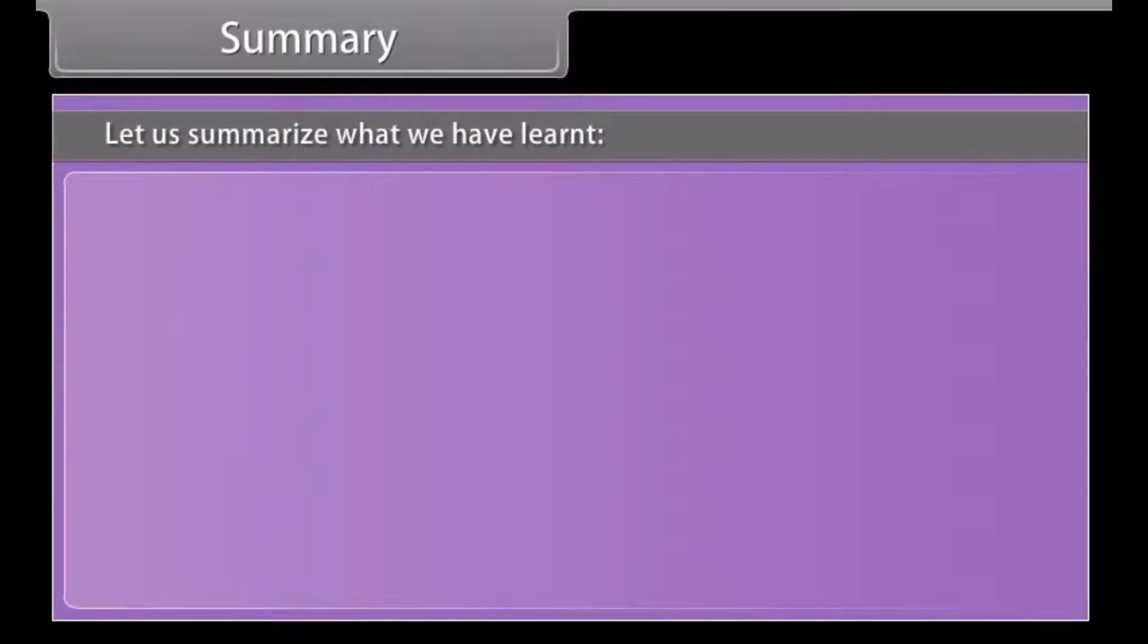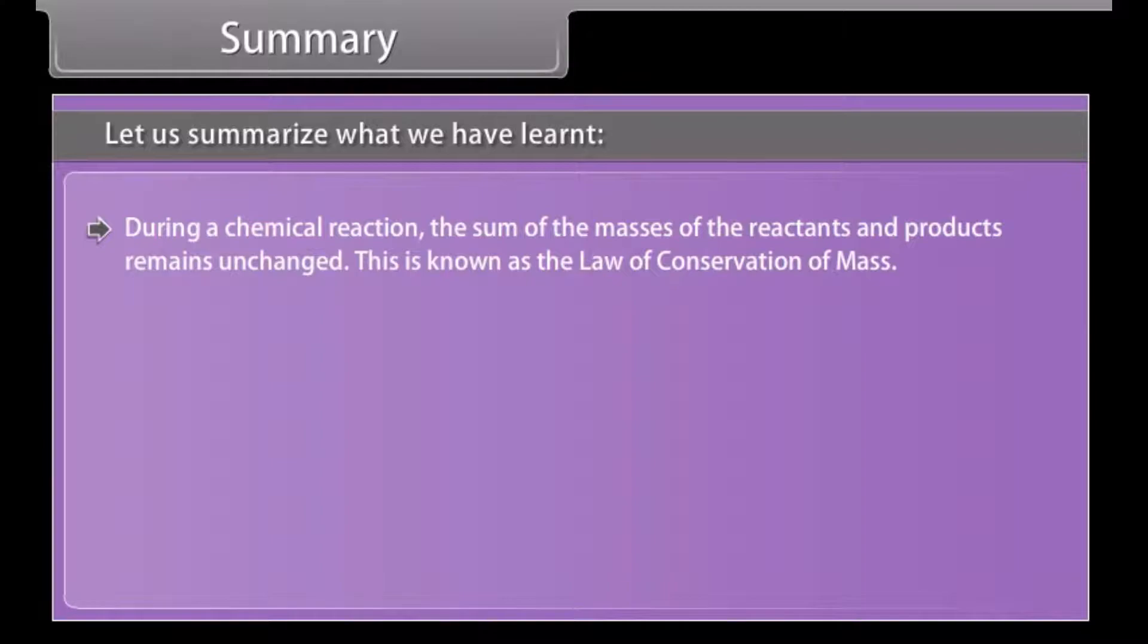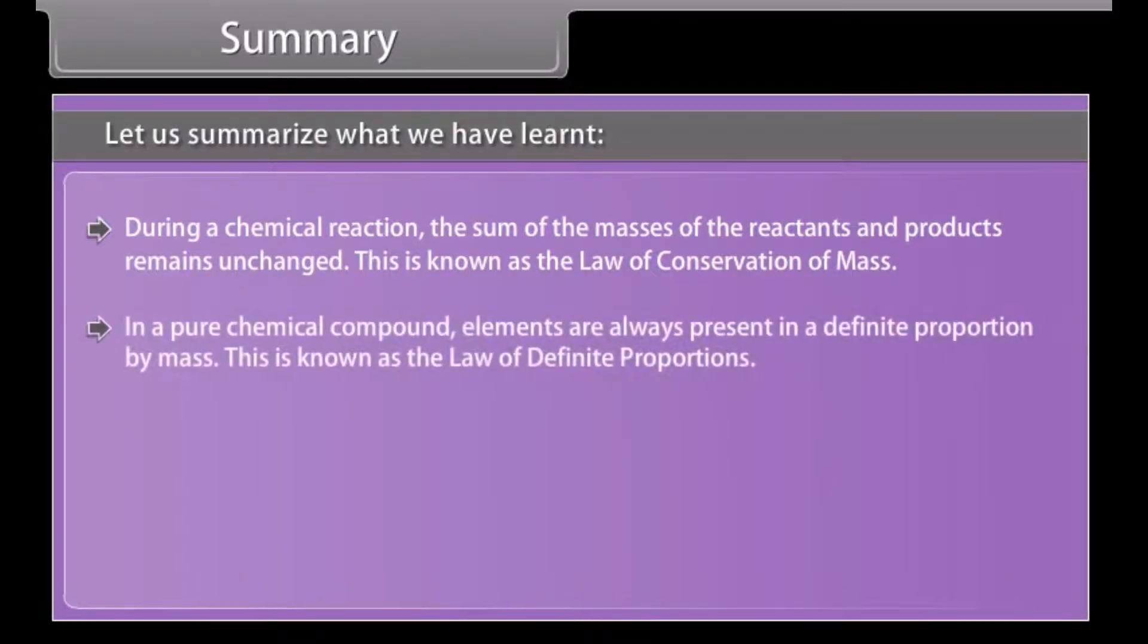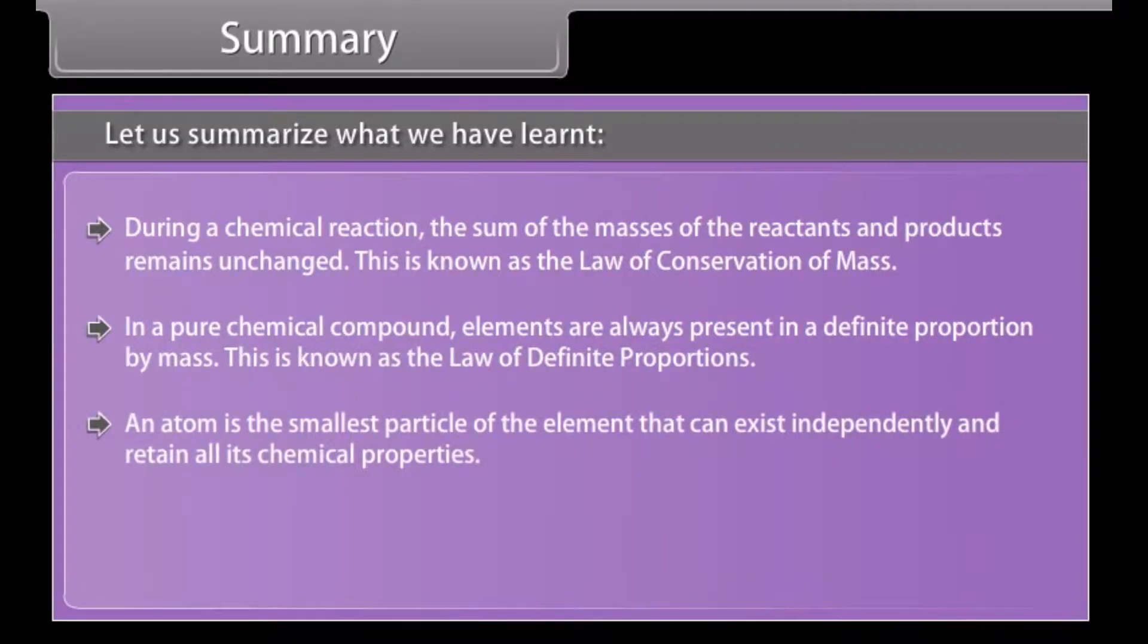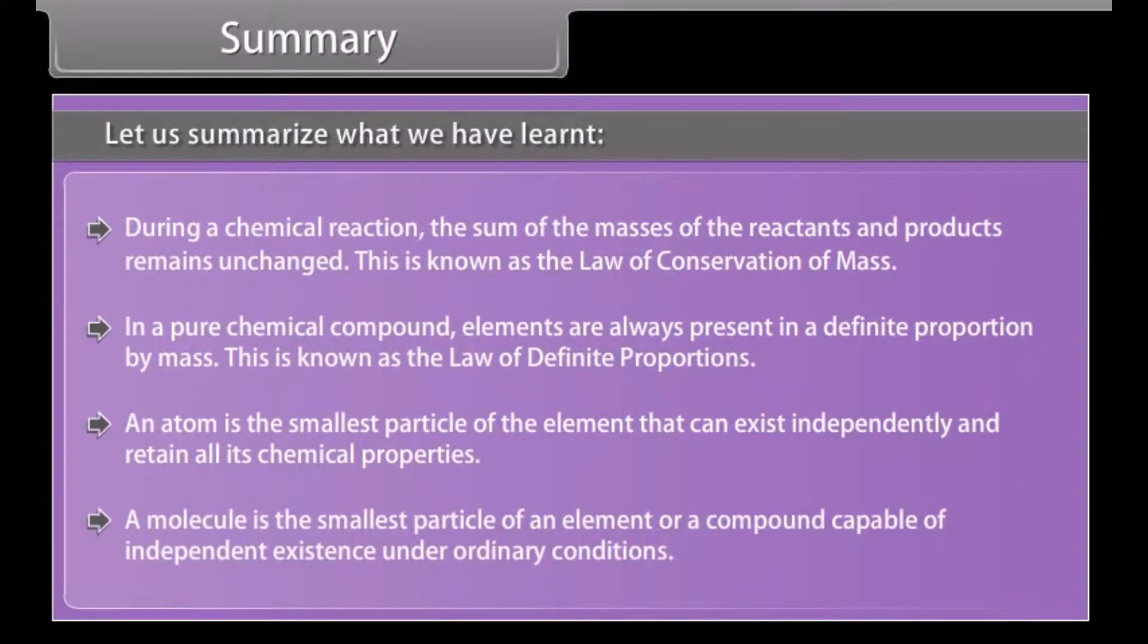Summary. Let us summarize what we have learned. During a chemical reaction, the sum of the masses of the reactants and products remains unchanged. This is known as the law of conservation of mass. In a pure chemical compound, elements are always present in a definite proportion by mass. This is known as the law of definite proportions. An atom is the smallest particle of the element that can exist independently and retain all its chemical properties. A molecule is the smallest particle of an element or a compound capable of independent existence under ordinary conditions.